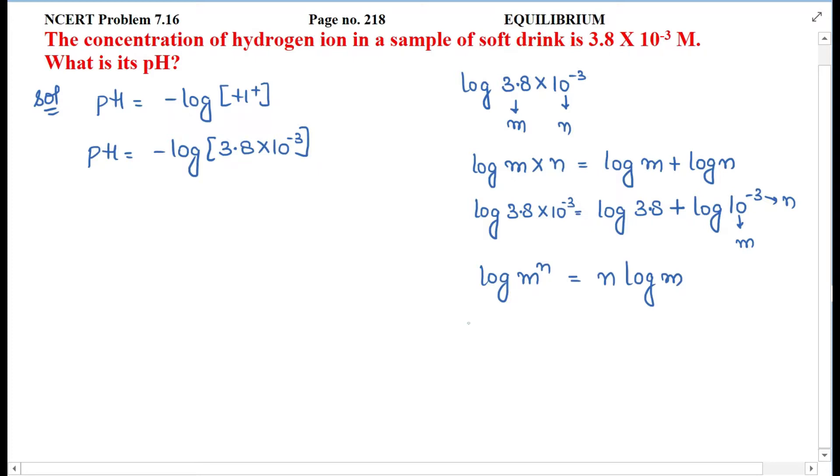So our log 3.8 × 10^-3 will become log 3.8 plus minus 3 came in front, times log 10, right?